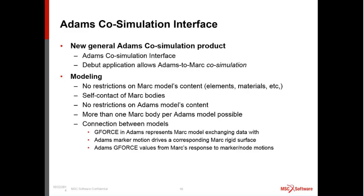The interaction method between the MARC and the ADAMS model is defined essentially as a G-force. An ADAMS marker's motion drives a corresponding rigid surface in MARC. You identify a marker in the ADAMS model — which lies on some body in ADAMS — that corresponds to a rigid surface in MARC. Therefore the ADAMS marker's motion will move the MARC rigid surface, and whatever force response occurs in MARC is passed back to the ADAMS G-force.